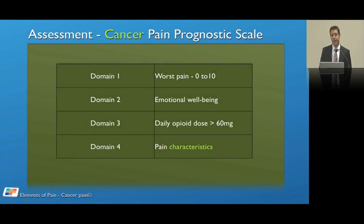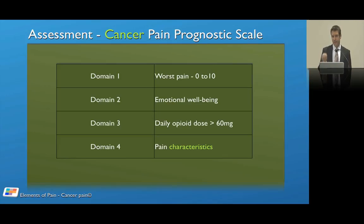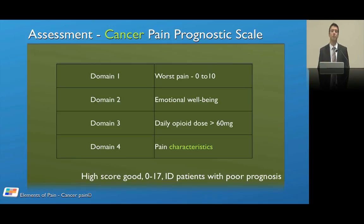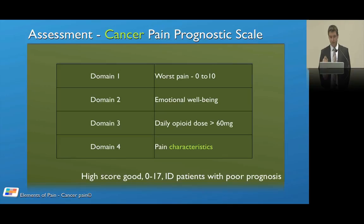The cancer pain prognostic scale has four domains: worst pain scored 0-10, emotional well-being of the patient, daily opioid dosing — because high opioid doses suggest tolerance and possibly difficult-to-control pain — and characteristics of pain. It provides a score from 0 to 17, where a high score means relatively good prognosis. This is useful in identifying patients with a poor prognosis, and gives us some resemblance to the TNM classification in that we can prognosticate regarding pain.